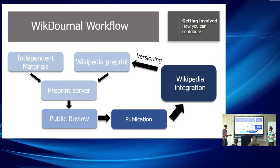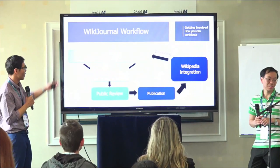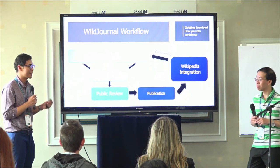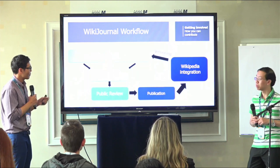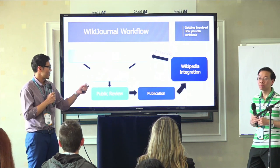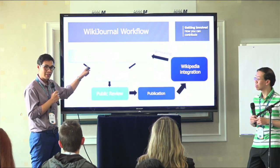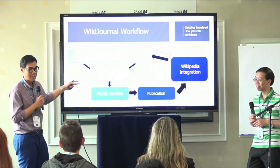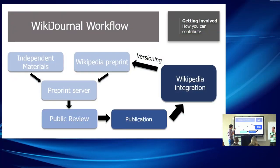There are two different ways to contribute to WikiJournals. You can conduct your own independent research — perform an experiment, carry out all the work needed for publication, write your manuscript, and submit it to the WikiJournal page. Or you can take existing Wikipedia articles and submit them to WikiJournal. Those are the two possibilities for how you contribute as an author.